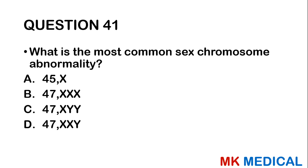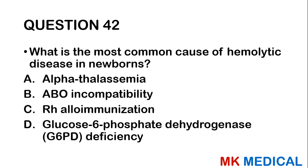Question forty-one: What is the most common sex chromosome abnormality? A, 45X; B, 47XXX; C, 47XYY; D, 47XXY. Option A is Turner syndrome; option D is Klinefelter syndrome. The answer is most likely option D, 47XXY — Klinefelter — which is the most common sex chromosome abnormality.